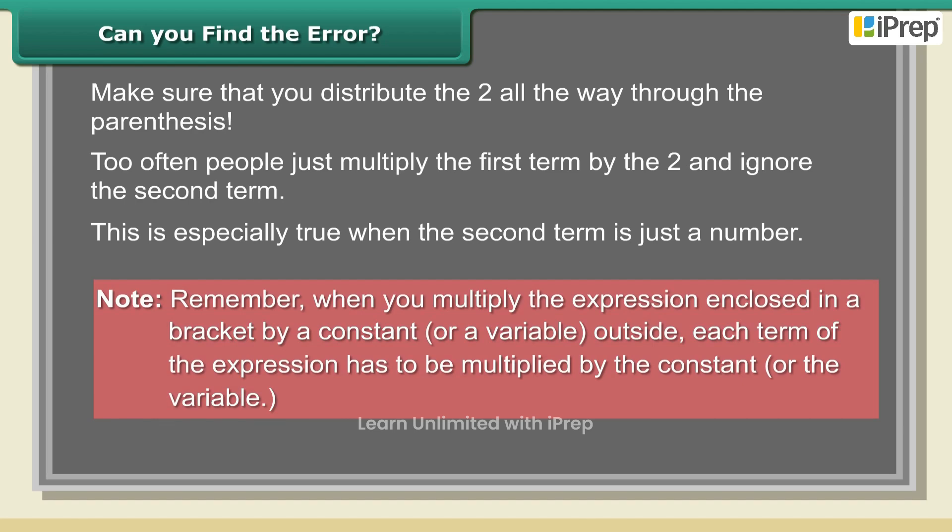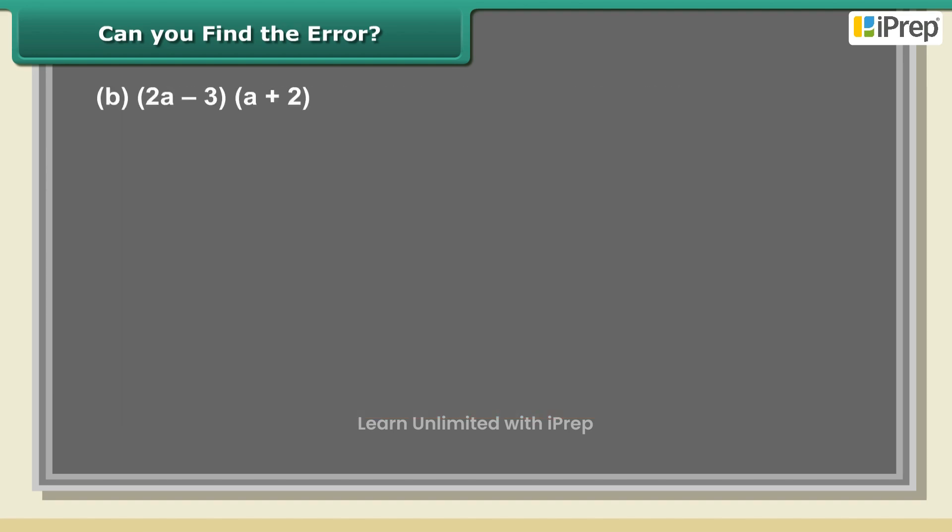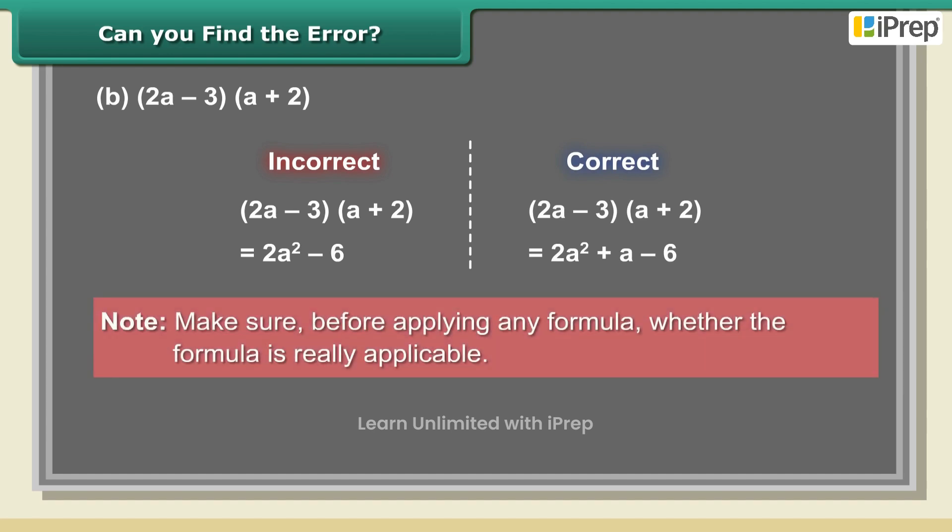Remember, when you multiply an expression enclosed in a bracket by a constant or variable outside, each term of the expression has to be multiplied. (b) (2a - 3)(a + 2). Incorrect: (2a - 3)(a + 2) = 2a² + a - 6. Make sure before applying any formula whether the formula is really applicable.